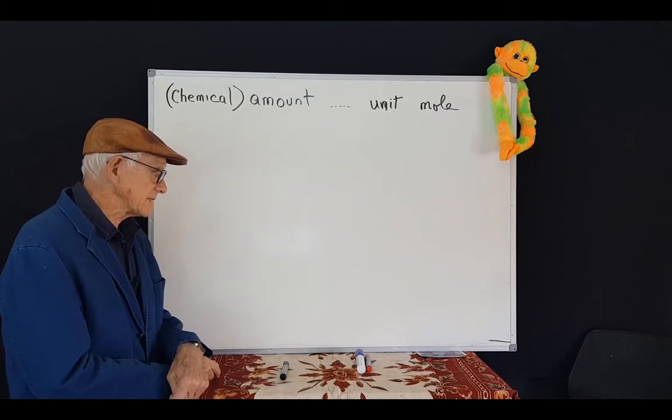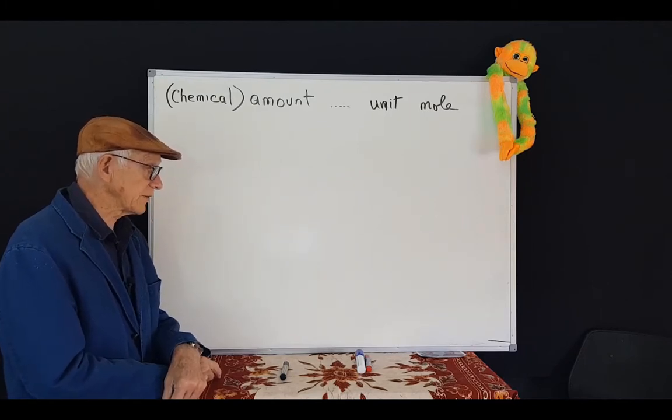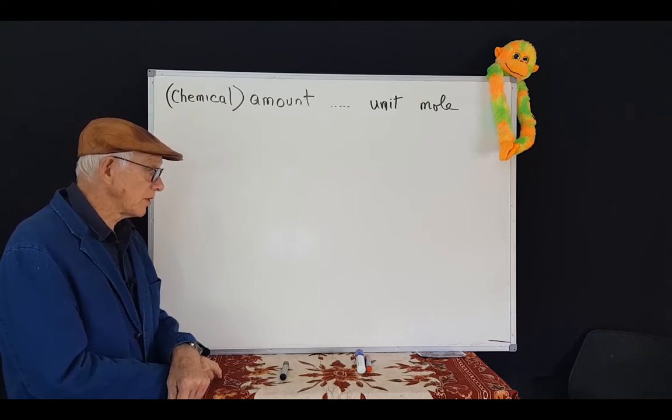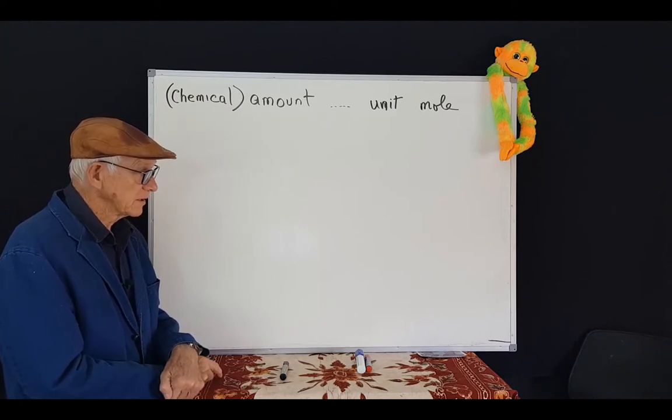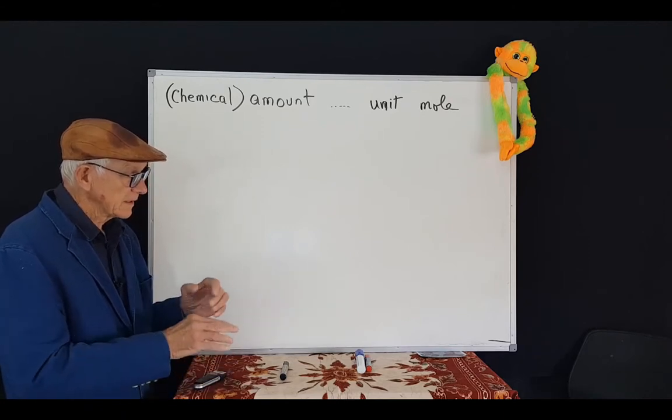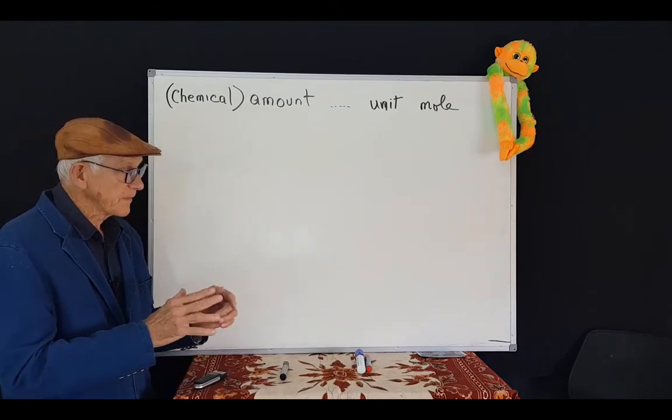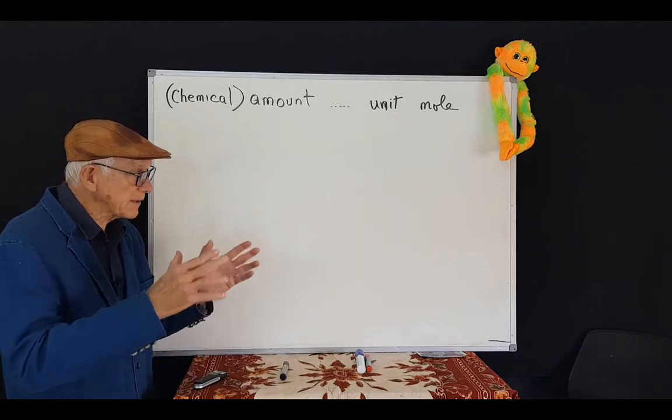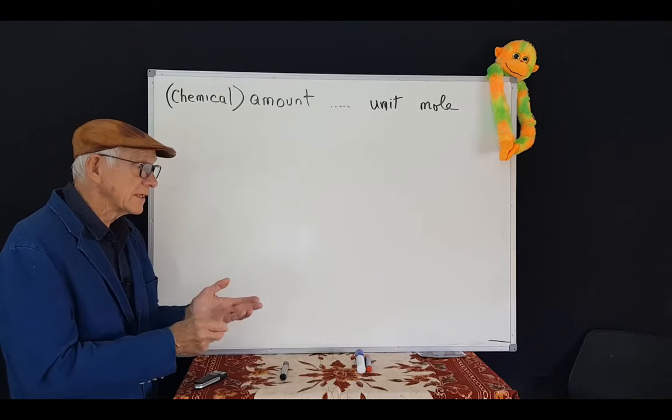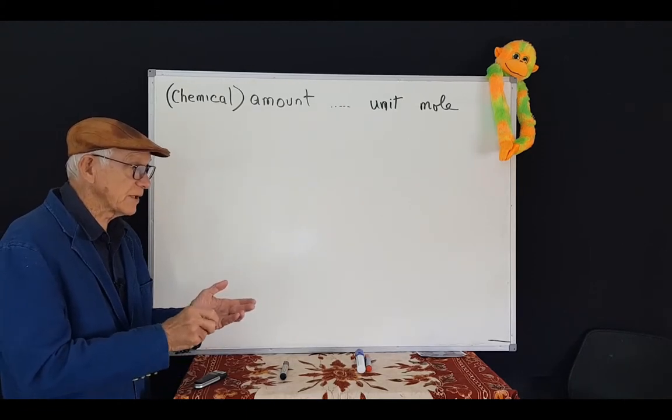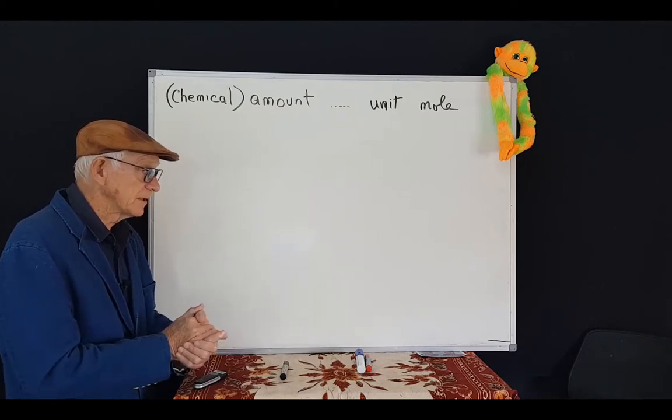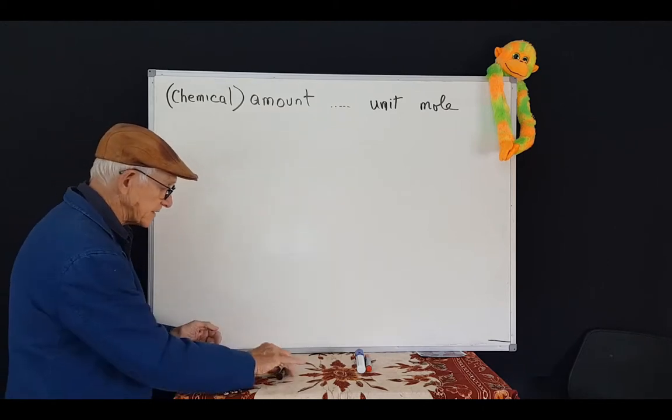Well, Ozzy, 6.02 by 10 to the 23 is a number, and you've got the right number, but one mole is not a number. One mole is technically different from that. Try to think about this. A mole is the amount of stuff in a sample, how much of the sample contains 6 by 10 to the 23 particles of some specified type. The amount that contains.